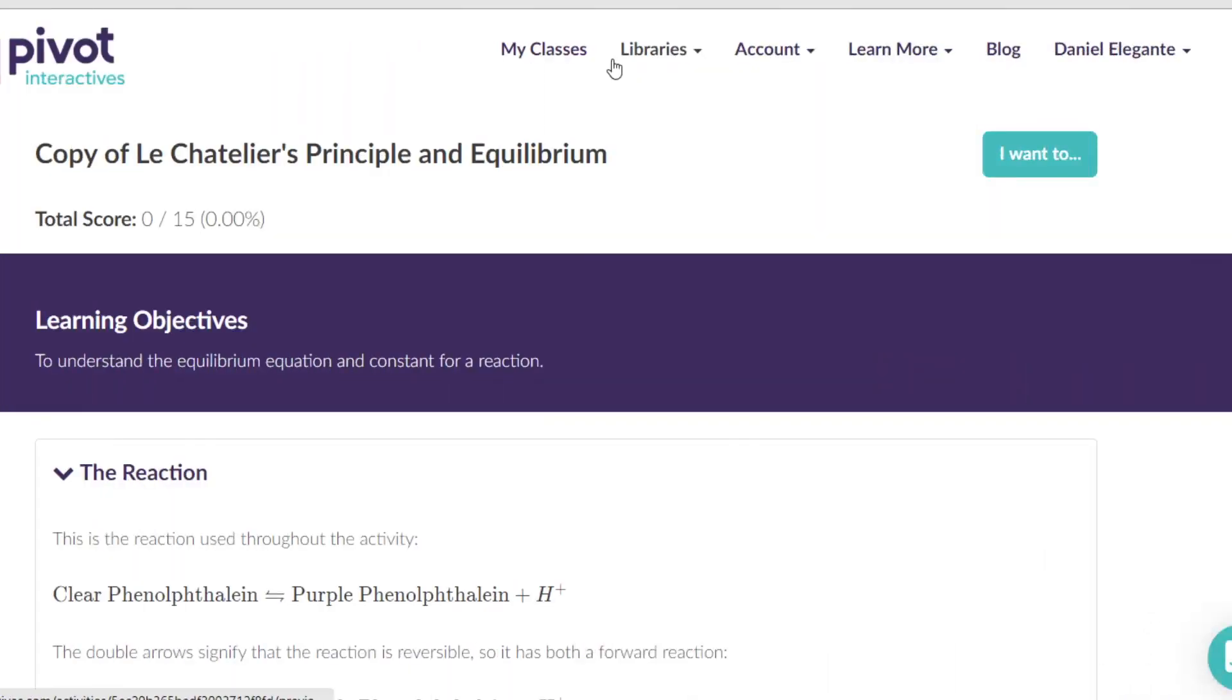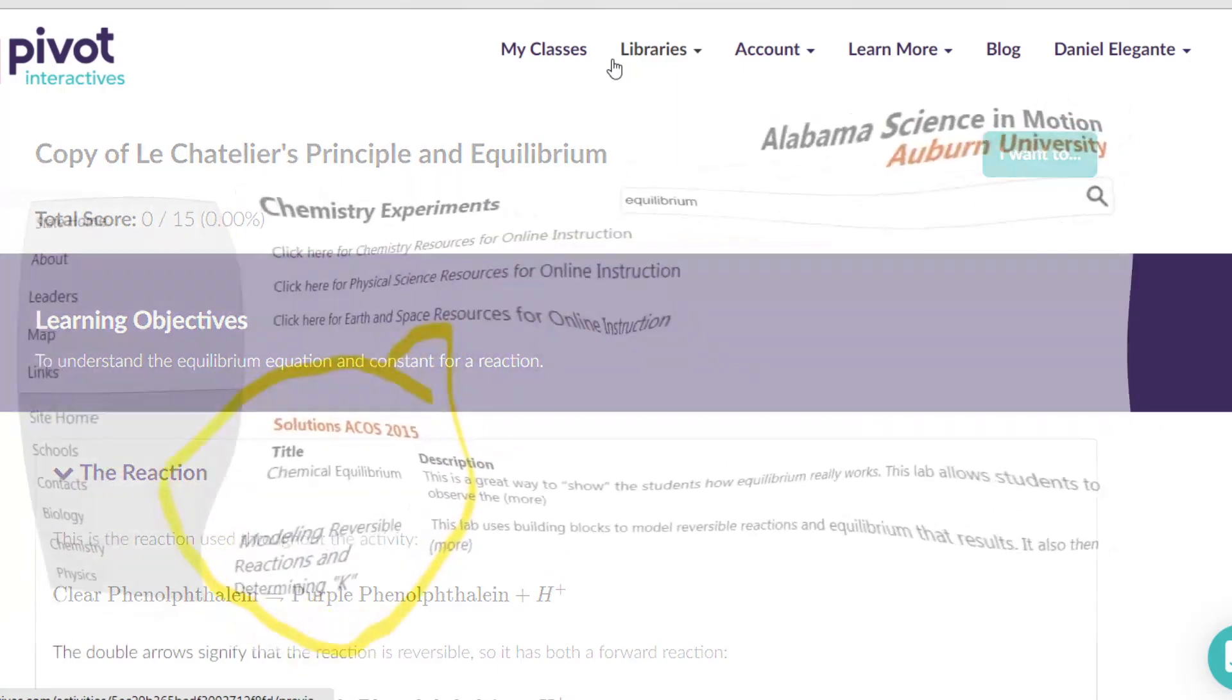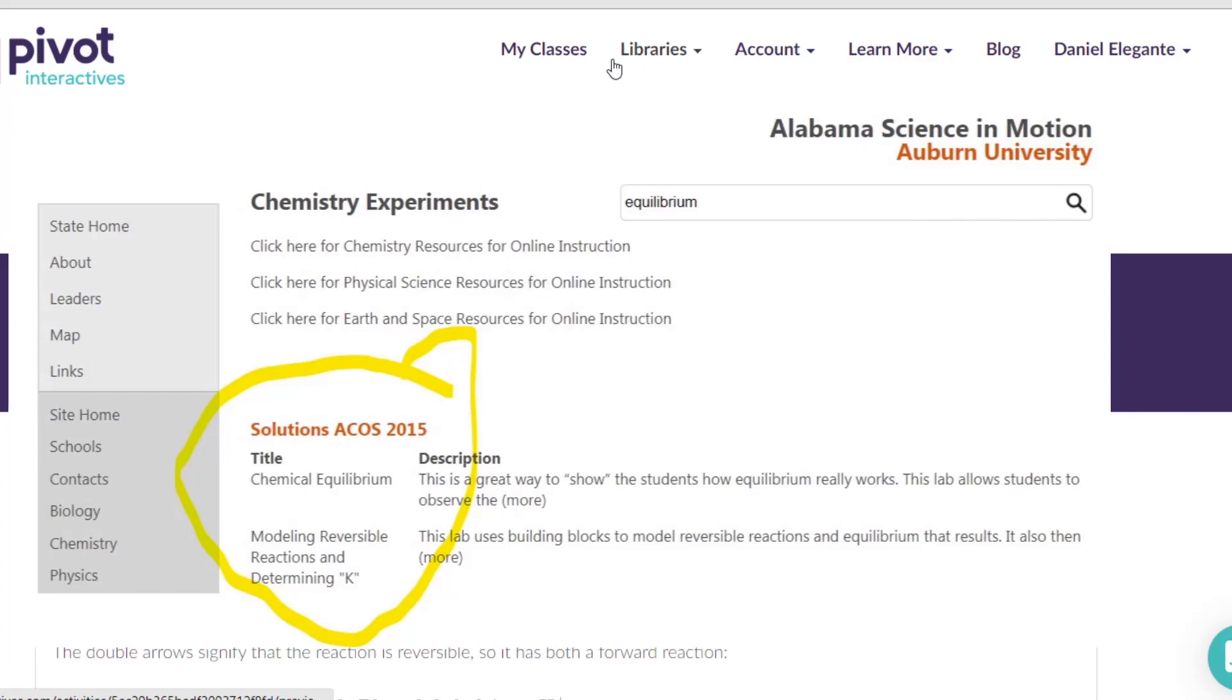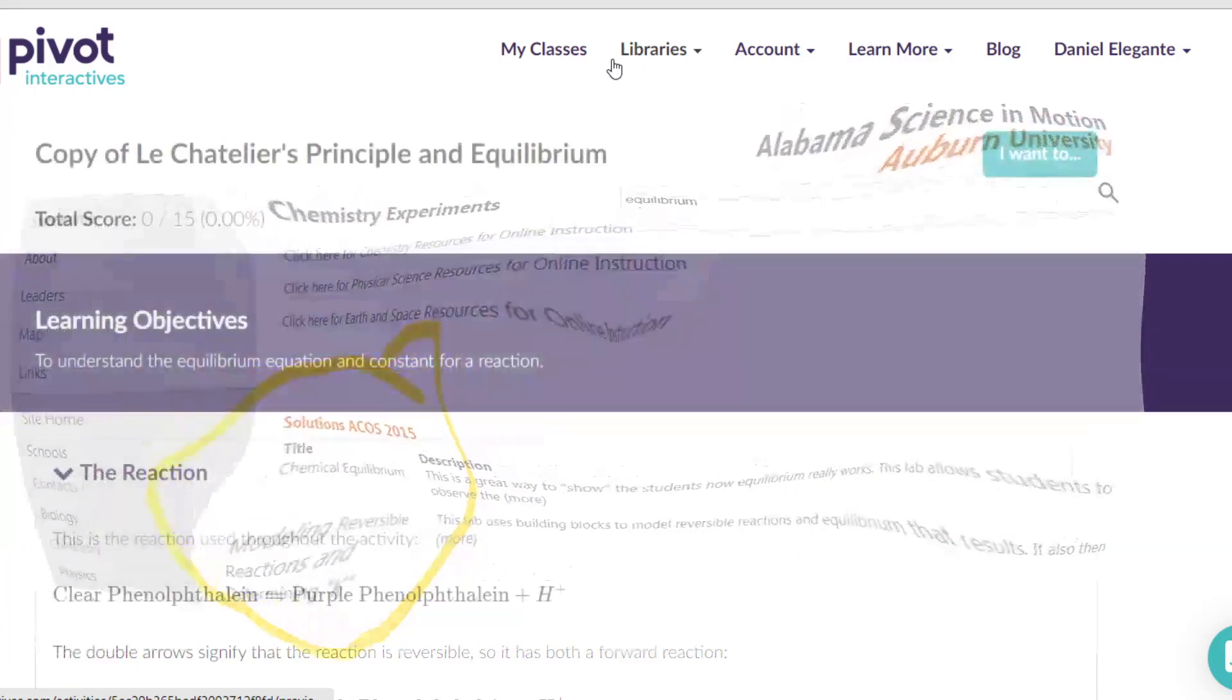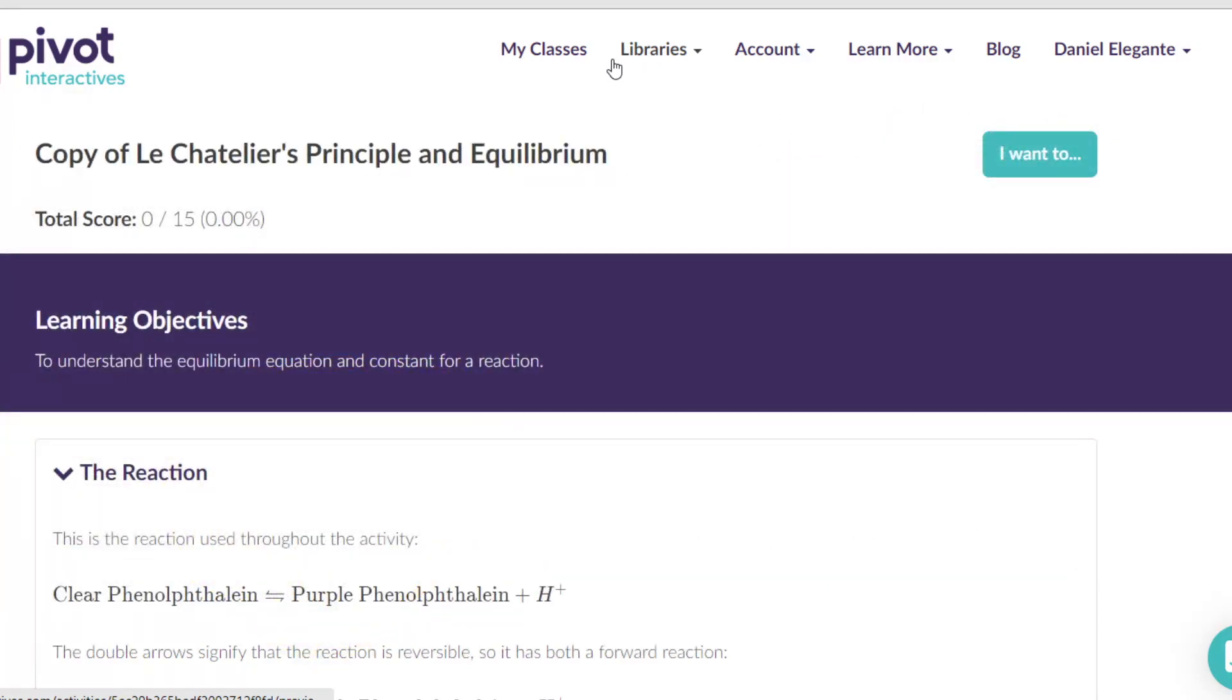One of the hardest concepts for students to master is the idea of equilibrium. Science in Motion has several equilibrium labs, but most of them have to do with more of a qualitative, did it happen or not, and less of a quantitative.